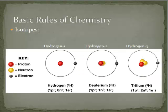Let's learn a few more basic rules of chemistry dealing with isotopes. We've determined that the number of protons determines what atom it's going to be. So hydrogen always has one proton — if you add another proton, you no longer have hydrogen, you have helium. If you add another proton, you have lithium. The element an atom is determined by the number of protons, or the atomic number.